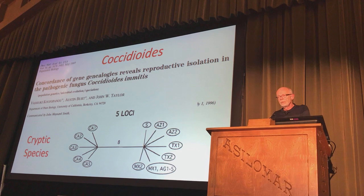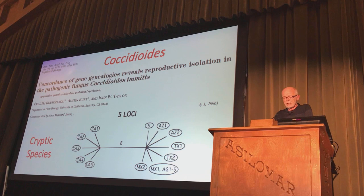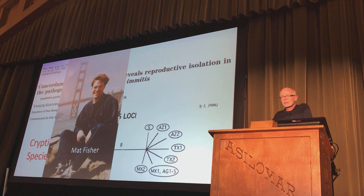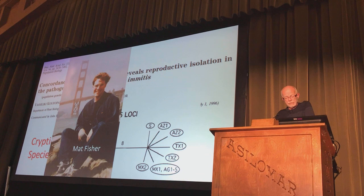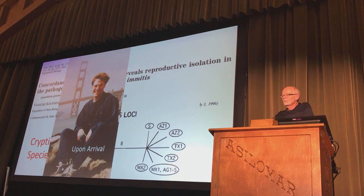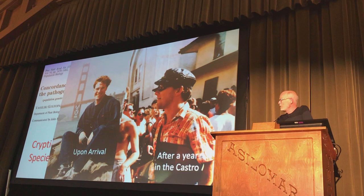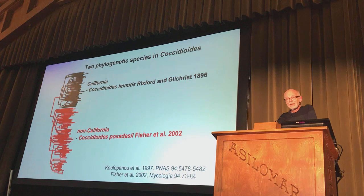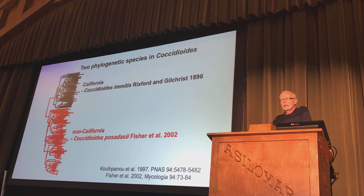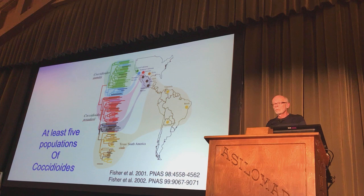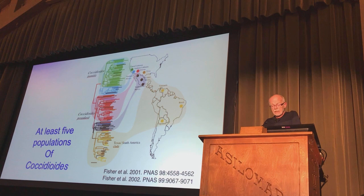Now I'm going to shift from this early history to two stories about how population work or evolutionary work can lead to further studies. Here's Vaso's tree, and that attracted a zoologist who worked on worms in rats, Matt Fisher, to come and be a postdoc. He came with his girlfriend Ayala Gill, they married before they left and went back to the UK. Matt greatly extended the sampling that Vaso had done, found there were two species and named them. But even more significantly, he found populations within those species. This work has been carried on especially by Bridget Barker in Arizona.